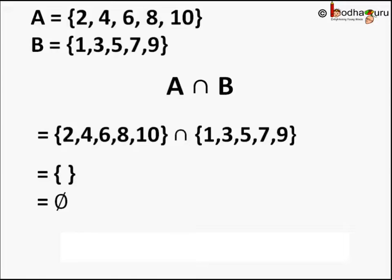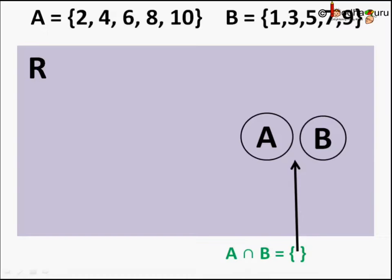Denoted by just two curly braces with no elements in between, or written like this. And in Venn diagram we represent it as A and B as two circles with no common part. Because there is no common element between the two.